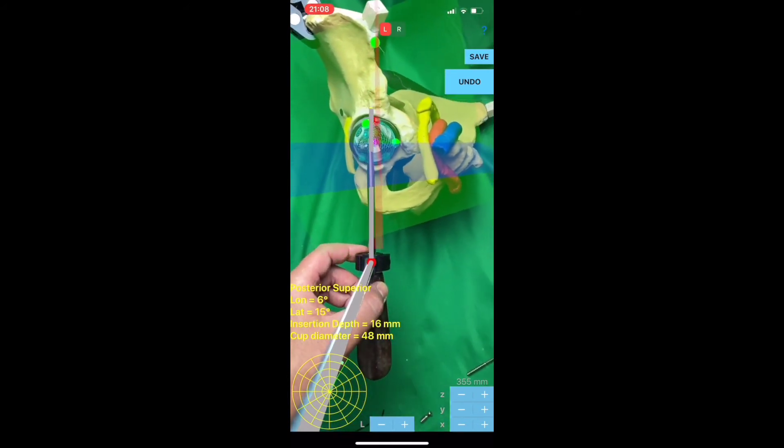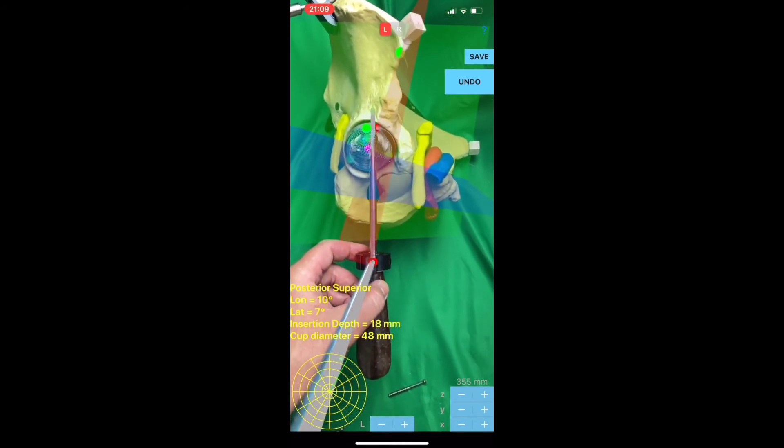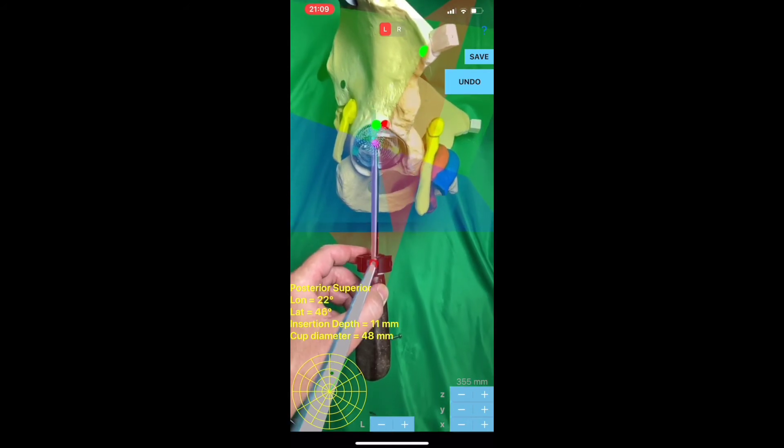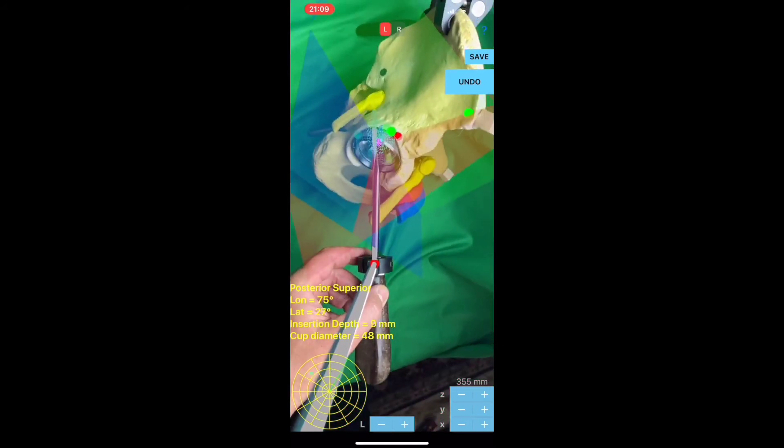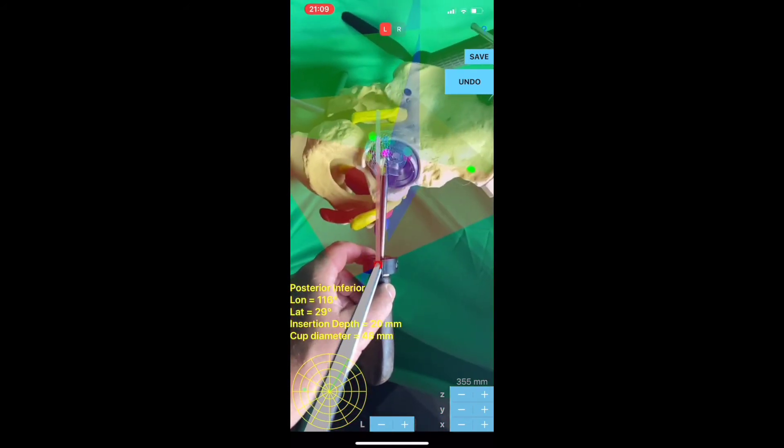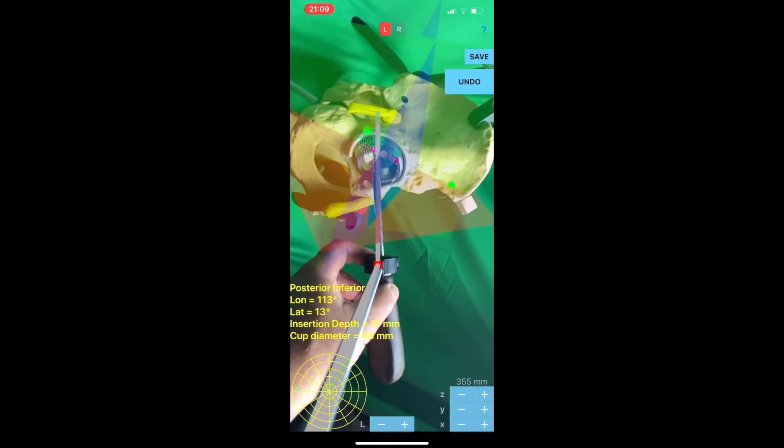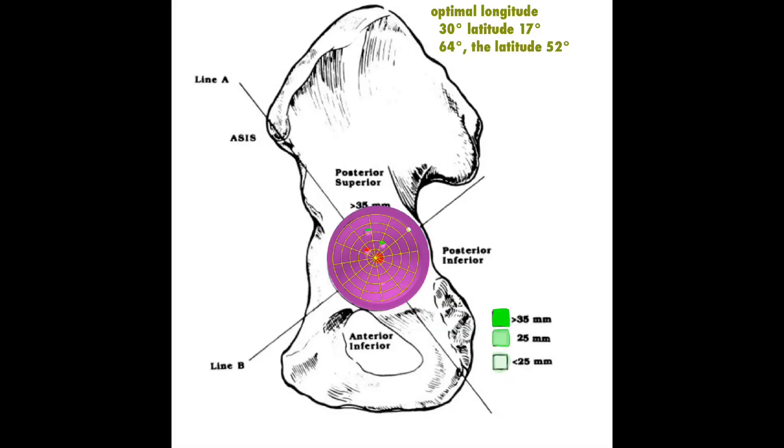Trans-acetabular screw placement could be helpful to place commercial cups into the acetabulum with given screw hole locations. The app provides intraoperatively a succinct topographical map of periacetabular depths, bone stock, and safe zones in relation to neurovascular structures based on anatomic studies reported by Vasilevsky et al.